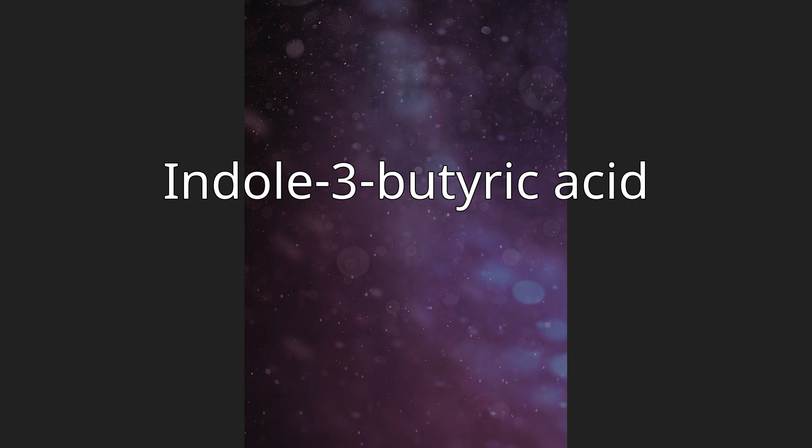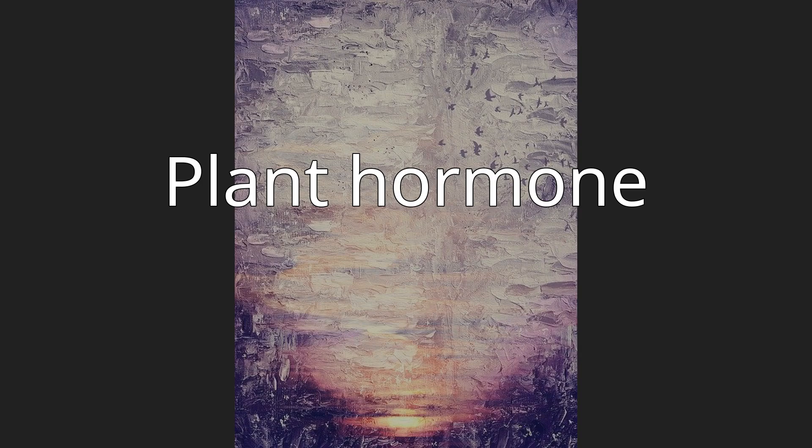IBA is a plant hormone in the auxin family and is an ingredient in many commercial horticultural plant rooting products. Since IBA is not completely soluble in water, it is typically dissolved in 75% or pure alcohol for use in plant rooting, making a solution of between 10,000 and 50,000 ppm.